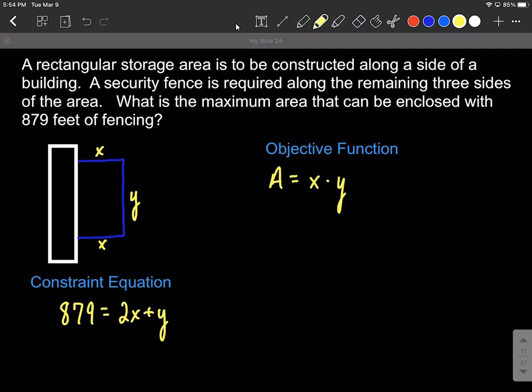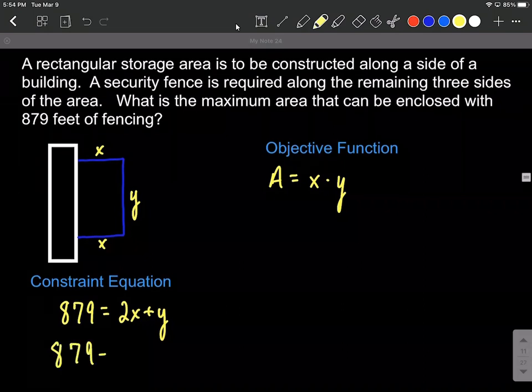We're going to solve our constraint equation for one of the two letters. I think it's going to be easiest if we subtract two X from both sides and get Y on one side by itself. So 879 minus two X will put Y on one side all by itself for the constraint equation.